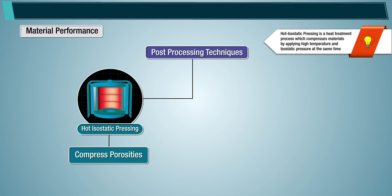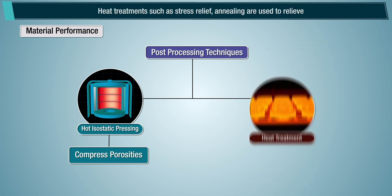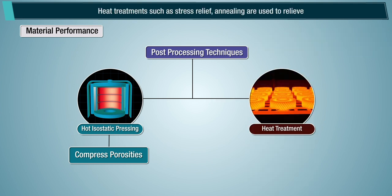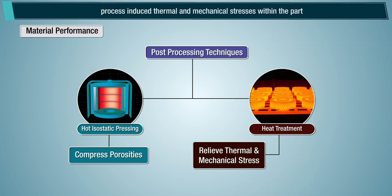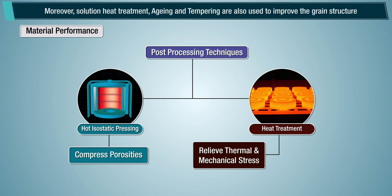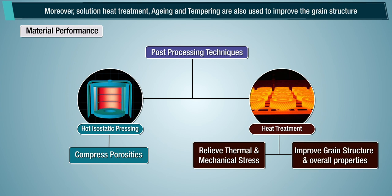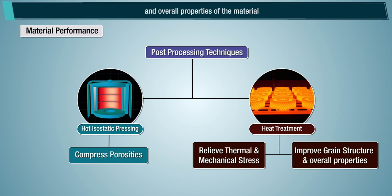Hot isostatic pressing is a heat treatment process which compresses materials by applying high temperature and isostatic pressure simultaneously. Heat treatments such as stress relief annealing are used to relieve process-induced thermal and mechanical stresses within the part. Moreover, solution heat treatment, aging, and tempering are also used to improve the grain structure and overall properties of the material.